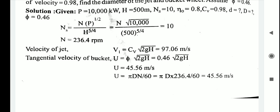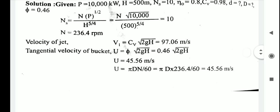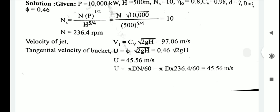Using the tangential velocity formula U = π D N / 60, and substituting U = 45.56 m/s and N = 236.4 rpm, we can find the wheel diameter D. The wheel diameter D is calculated to be 3.68 meters.